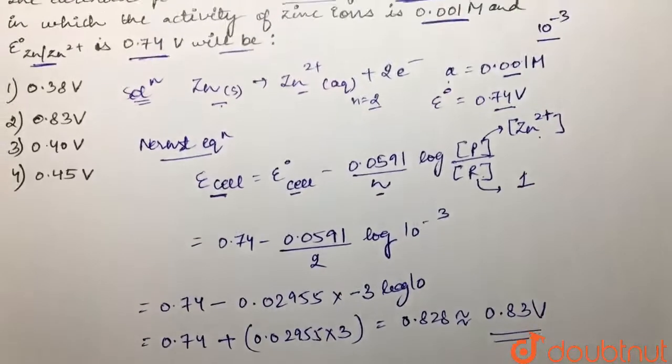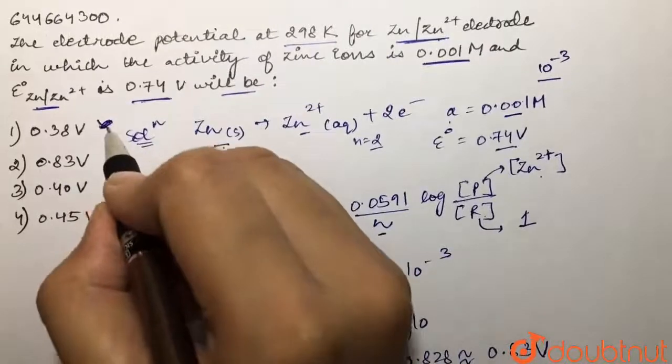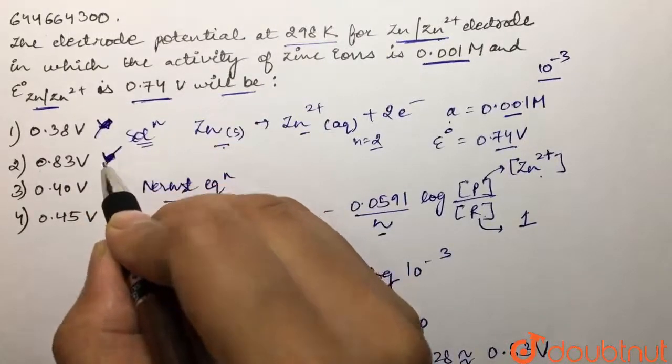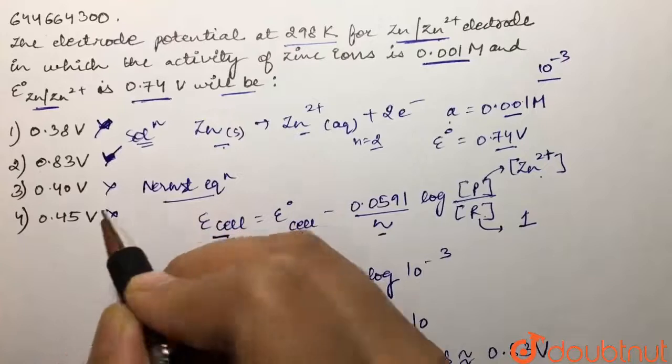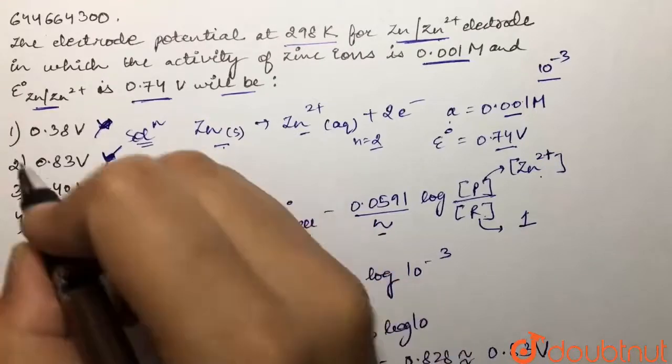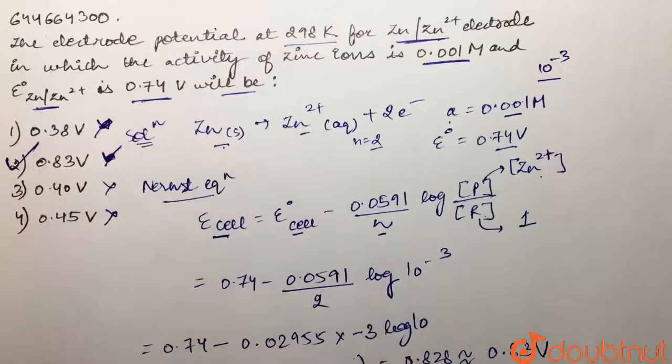So if we look at our options, first option is 0.38, that is not correct. 0.83 is correct. 0.4 is not correct, 0.45 is not correct. So our correct answer is 0.83 volt, that is given in option number two. So our answer is second.